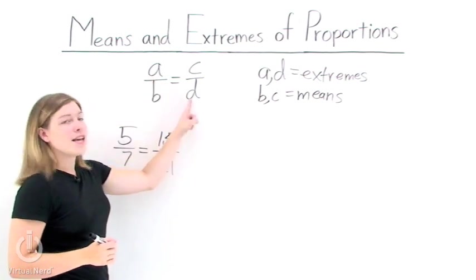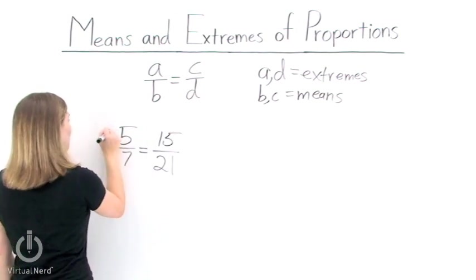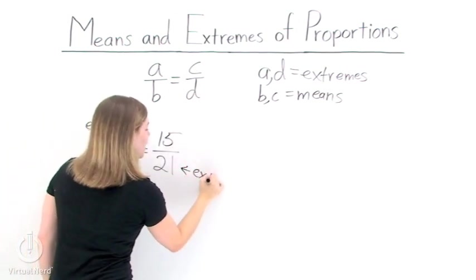Well, a and d are our extremes. So here, we have 5 and 21. 5 is an extreme, and 21 is an extreme.